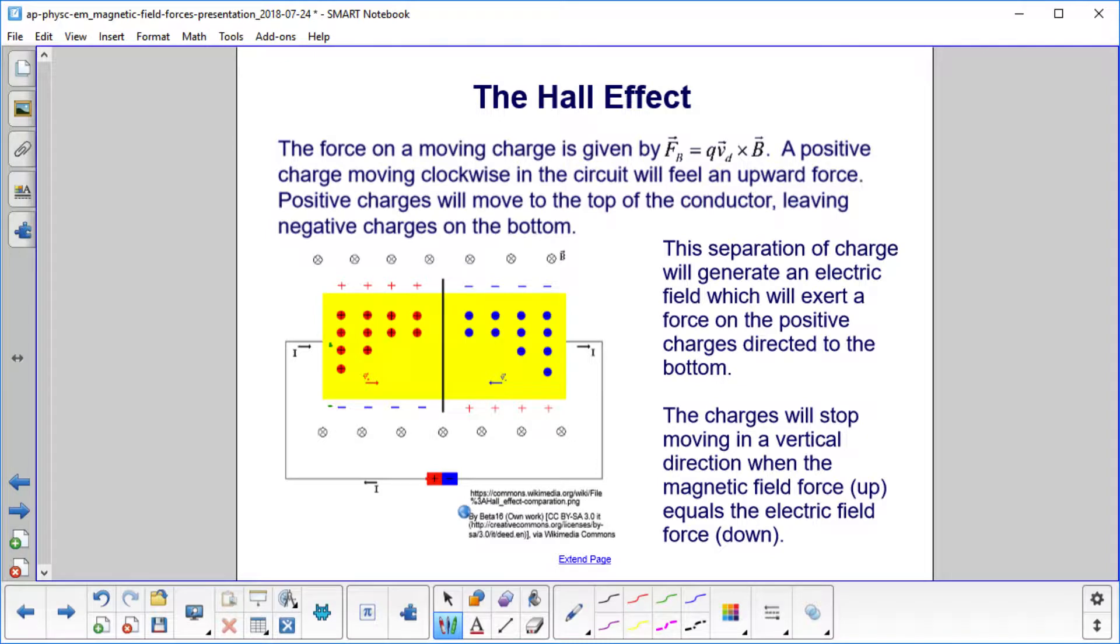Let's first assume that we have positive charges moving. They go into the magnetic field and they feel a force, QV cross B. If you use the right-hand rule, and the positive charges are going this way, the magnetic field is into the board, that will push the positive charges to the top, leaving negative charges on the bottom.